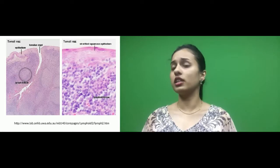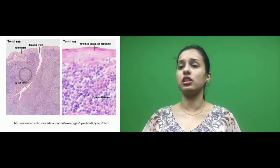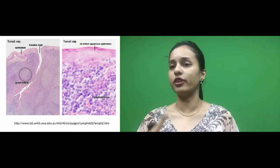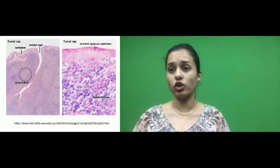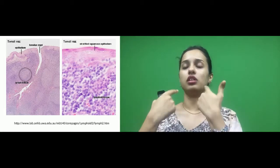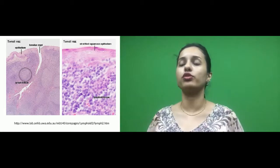The tonsil is a type of MALT structure present posteriorly, forming a ring around the oropharynx and nasopharynx. There are different types of tonsils: the palatine tonsil, lingual tonsil, and pharyngeal tonsil. The picture is mainly showing the palatine tonsil, which is present on either side at the posterior aspect of the oropharynx.